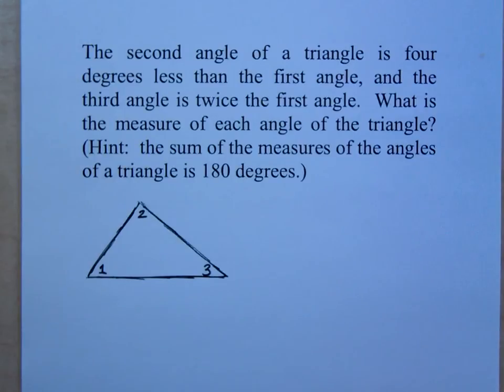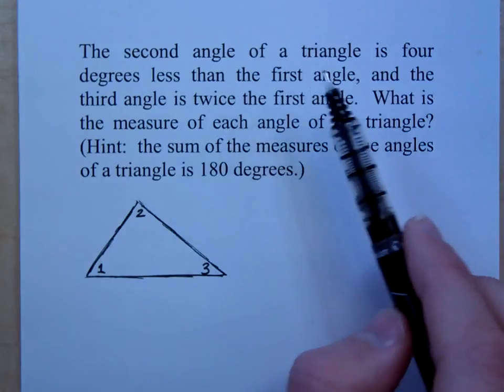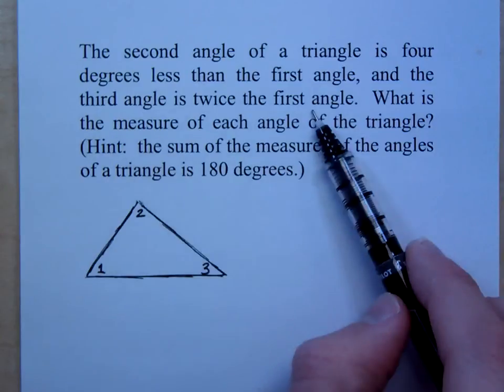This is just like the board problem that we did where the sum of the angles is equal to a total amount. Like in the board problem that we just did, the sum of the pieces is equal to the total length. Now as I read this, it says the second angle is four degrees less than the first, and then the third angle is twice the first angle.